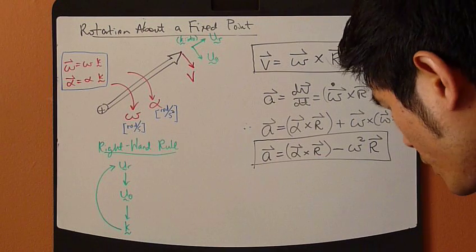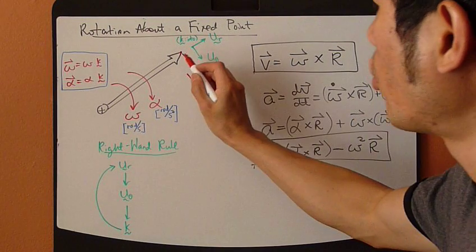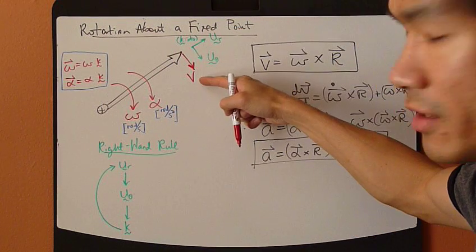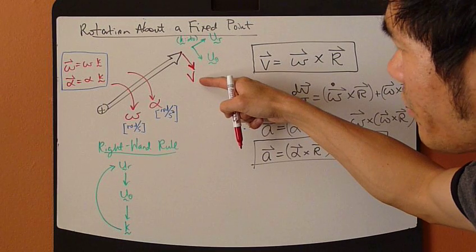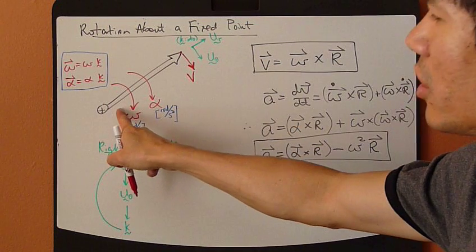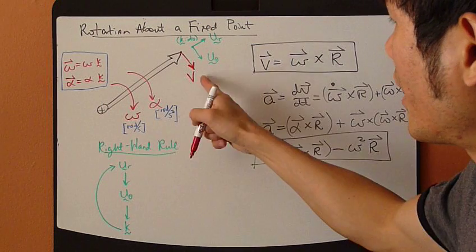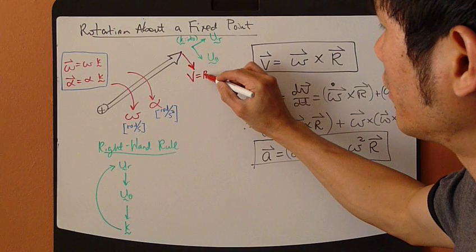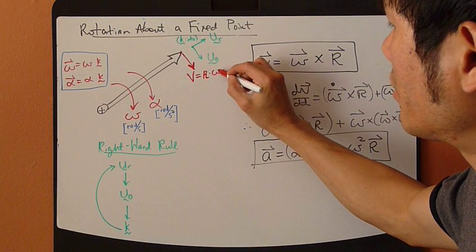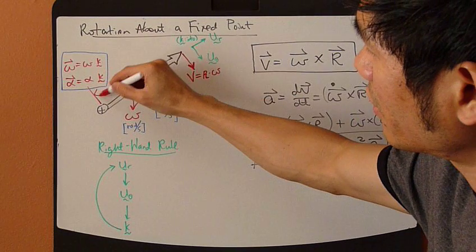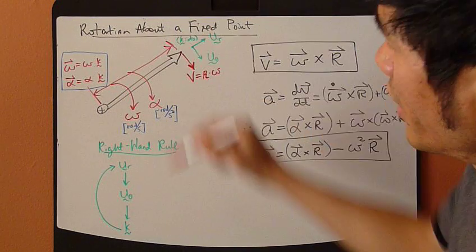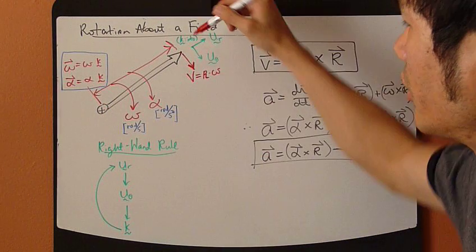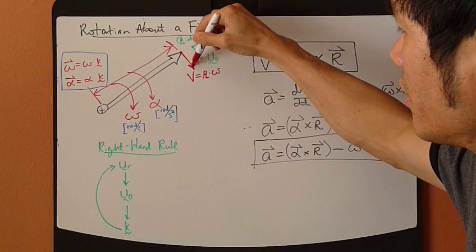At any point along this rigid body, you can find out the velocity if you know the angular velocity. The velocity at this point is simply the radius times omega, the radius being from the point of origin to the point where you're taking the velocity.